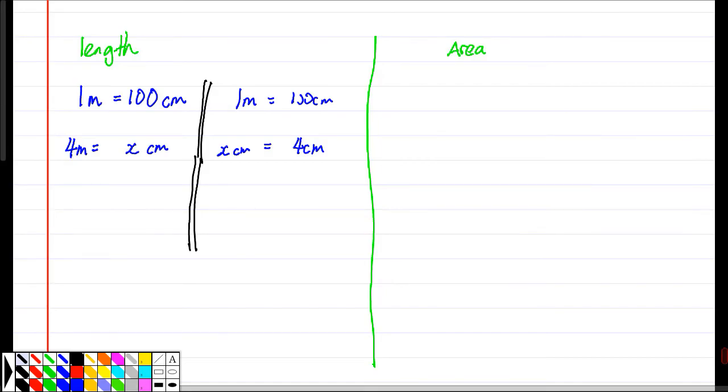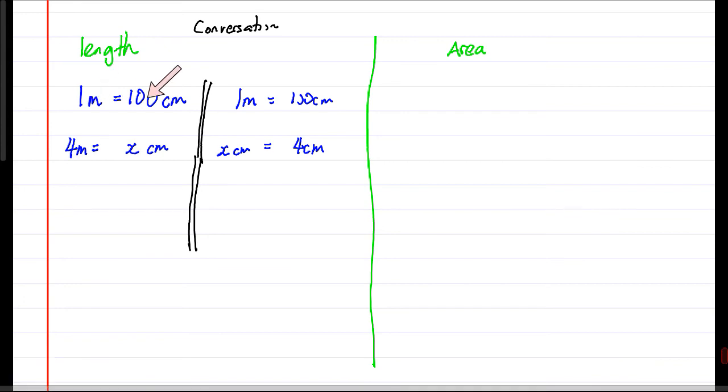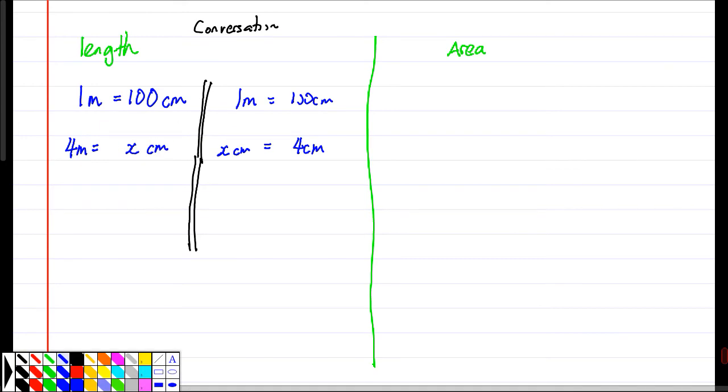Okay, so in this video we will talk about conversion of length and area. Let's start with the first one. For example, one meter is 100 cm. Four meters, how many cm is that? So two ways to think about it. One way is I can multiply by four here and multiply by four here.